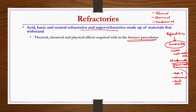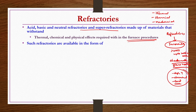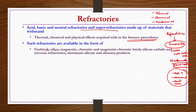All these conditions require refractories to have thermal, chemical, and mechanical stability. Such refractories are available in the form of fire brick, silica, magnesite, chromite or combined magnesite-chromite bricks, silicon carbide and zirconia refractories, aluminum silicate and aluminum products, etc.